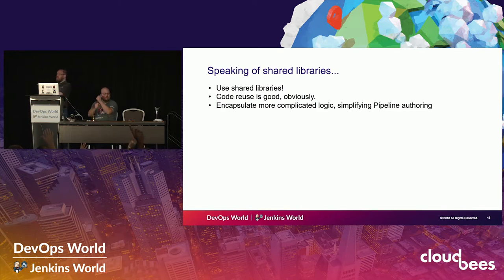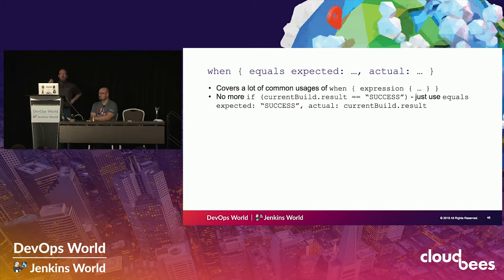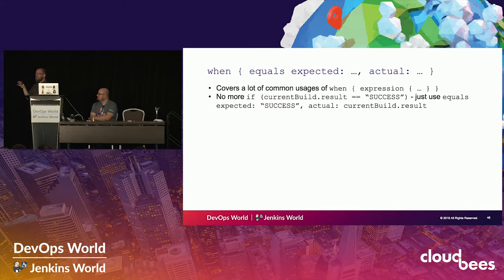Who here is using shared libraries? You should be using shared libraries if you're copying code around. It's a good way to encapsulate, to reuse, to use more advanced and expressive scripted pipeline inside declarative pipelines. Especially if you're a shared services person or a Jenkins admin, it lets you have more powerful stuff that you expose to your devs for writing Jenkinsfiles without unleashing the whole world. I also added an equals condition this year because I was finding lots of tickets where people were doing when-expression checking if foo equals bar. There's now an equals condition - all it does is return true if the two things are equal.